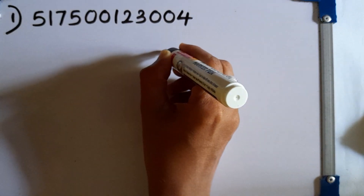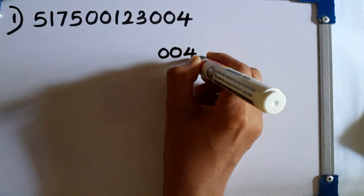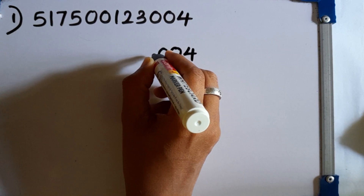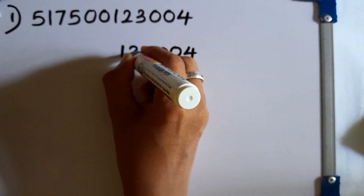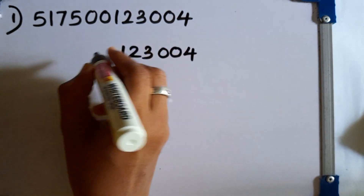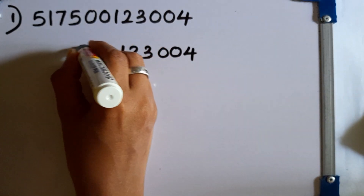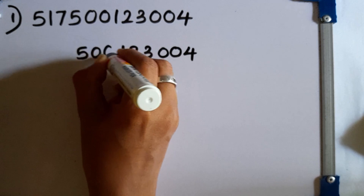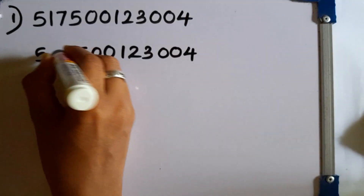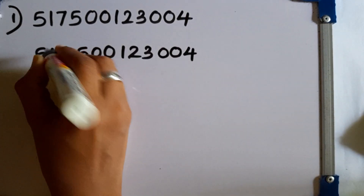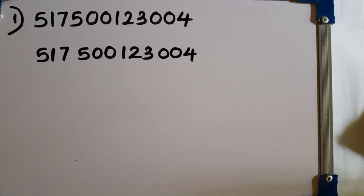I can write it like this: 0, 0, 4. Then you have to keep a small gap here. Then this one, and the last one is this. This is the way you write this number in standard form.